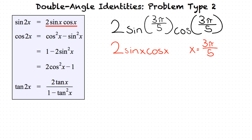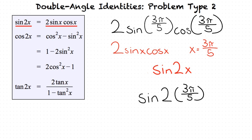Now that we know what our form is, we will look to see what double angle formula our problem is equal to. Looking at our table of double angle formulas, we see that our problem's form is equal to sine of 2x. We then insert our x value into our double angle formula, which results in sine of 2 times 3π over 5. We then distribute the 2 into 3π over 5, which results in our final answer of sine of 6π over 5.